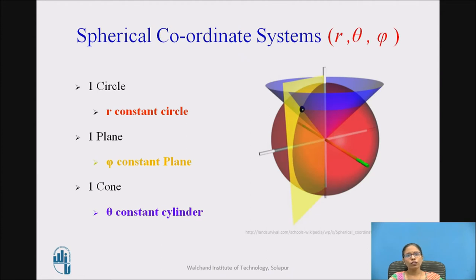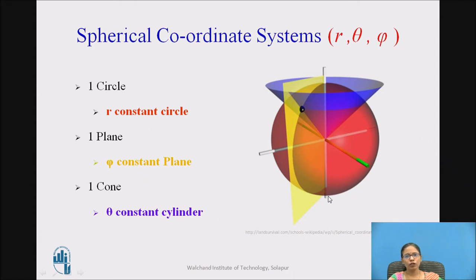Now we will see the relation between cartesian and spherical. Just revise the spherical coordinate system in which the coordinates are r, theta, phi. The spherical coordinate system consists of one circle which is the r-constant surface, one plane which is the phi-constant plane shown in yellow color, and one cone which is the theta-constant cone shown here.